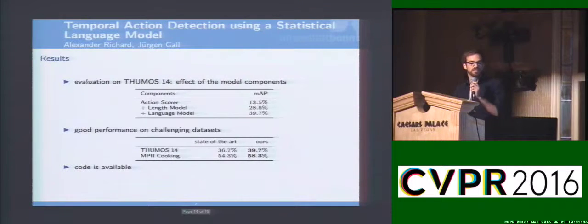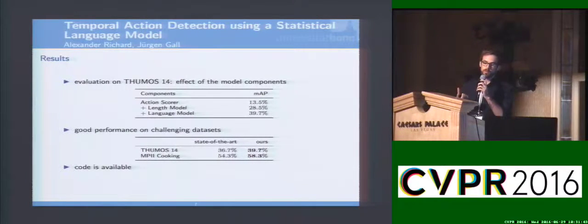Finally, looking at some numbers, we can see that adding the length model and the language model to our standard action scorer really improves the results. We obtain quite good performance on datasets like THUMOS 14 and MPI Cooking, which are state-of-the-art. We are about three to four percent better than them.